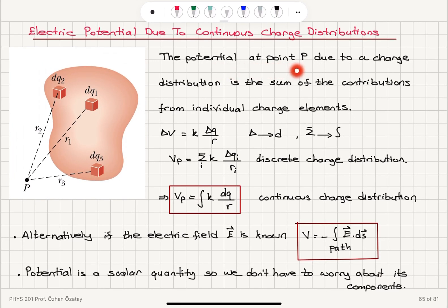So the potential at point p due to a charge distribution will be the sum of the contributions from individual charges. So that delta v due to the charge delta q will be k delta q over r.